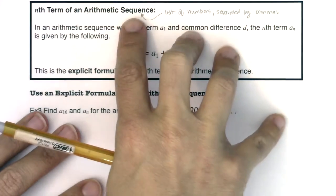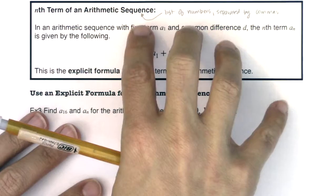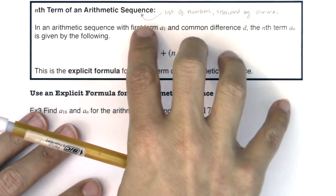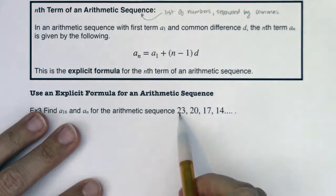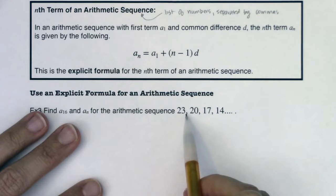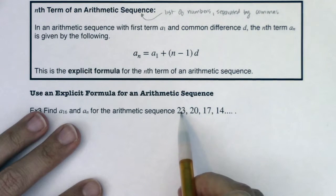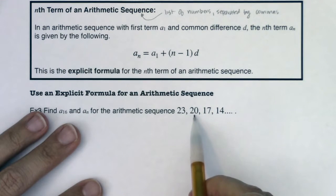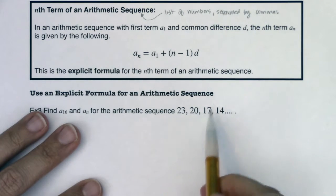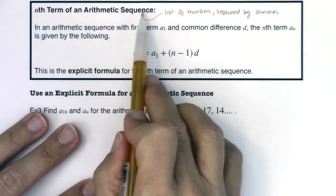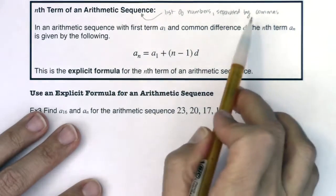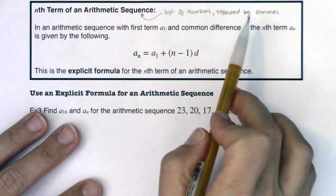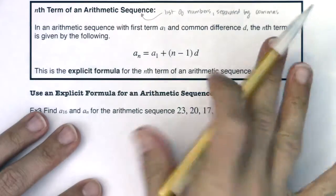When we get to 9.4, that's when we start adding these. So instead of 23, 20, 17, you'll see 23 plus 20 plus 17. Whenever you see sequence, it's just a list of numbers separated by commas — you're not adding anything.